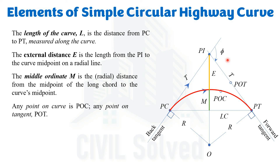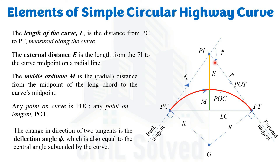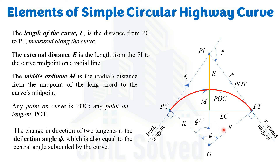We also have the internal angle, represented with capital I, called the angle of intersection. The addition of the angle of intersection and the deflection angle equals 180 degrees. From the basics of geometry, if the deflection angle is phi, then the central angle subtended by the simple circular curve is also phi. Since the vertical line from O to PI bisects the curve exactly at the mid, each half of the central angle equals half of the deflection angle.